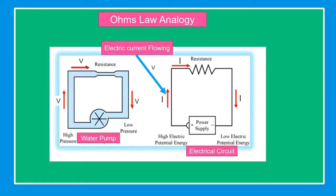Ohm's Law analogy: since we cannot see the current or electron flow, it would be nice to use a water pump flowing through a pipe as our comparison. The mechanical system consists of a pump pushing water through a closed pipe — the electrical current is similar to the water flowing through the pipe. The pipe is like a wire in the electrical circuit, and the pump is like a battery. The pressure generated by the pump drives the water through the pipes, just as voltage generated by a battery drives the current through the circuit. The valve or knob slows the water flow, creating a pressure difference — in the same way, resistance in the circuit restricts the flow of current.